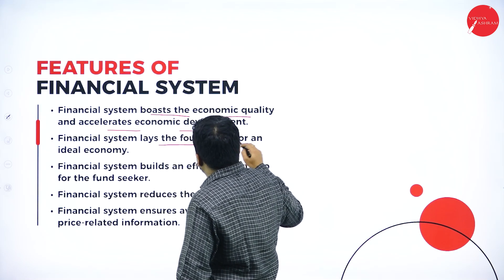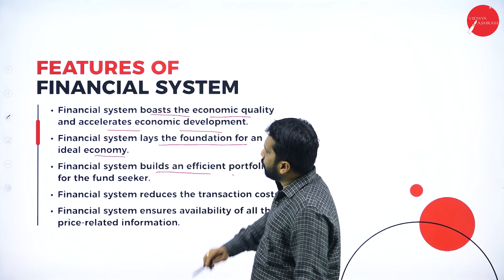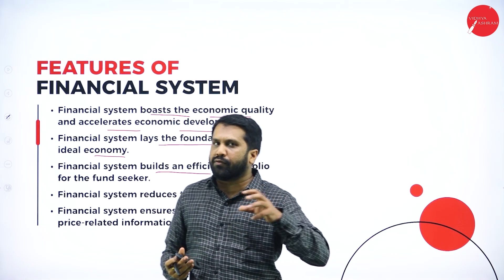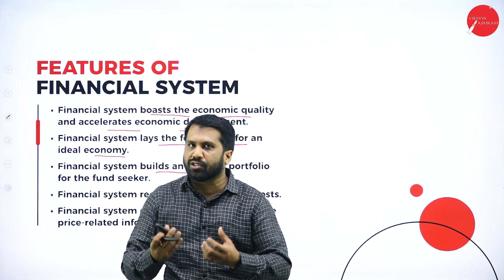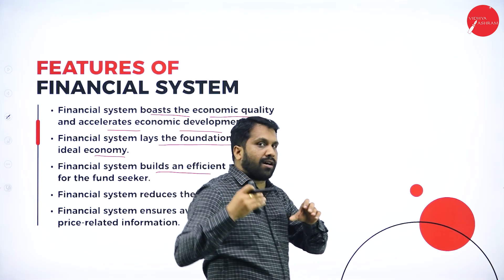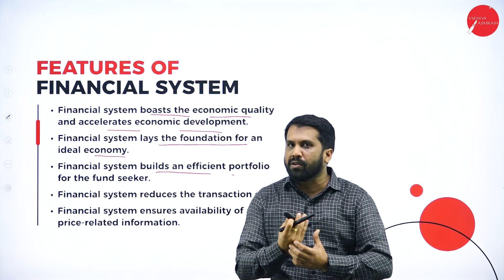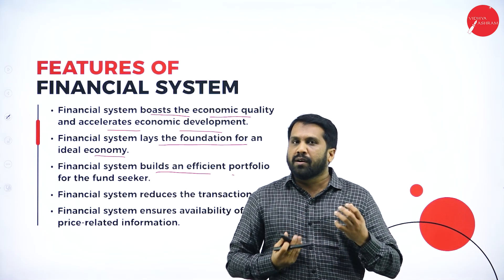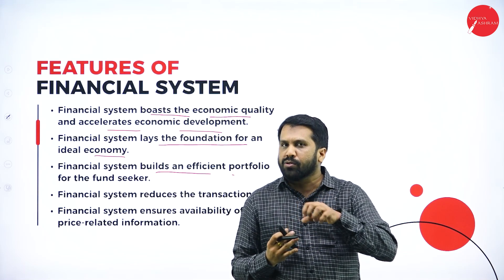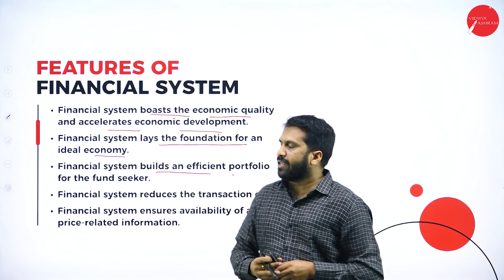Fifth: the financial system lays the foundation for an ideal economy. Sixth: the financial system builds an efficient portfolio. For example, in your stock market application you may have four to five stocks — two in profit and two in loss — the overall picture is your portfolio. Portfolio means you go to stocks which are risk-free and two stocks with more risk but more returns. You have to decide based on that.